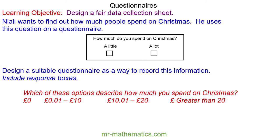Here is one suitable questionnaire. You can see we have an option for zero money, a range of amounts, and no overlapping categories. It wasn't necessary in this question to include a time period, because it is asking how much you spend on Christmas, and that could be over any amount of time.